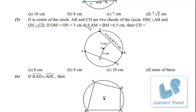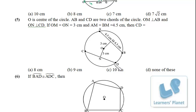Next: O is the center of the circle. AB and CD are two chords. OM is perpendicular to AB, ON is perpendicular to CD. If OM equals ON equals 3 cm and AM equals BM equals 4.5 cm, find CD. Equal chords have the same distance from the center. Since OM equals ON, AB equals CD. AB equals AM plus MB equals 9 cm, so CD also equals 9 cm. If you know the basic properties, the problems become very easy.